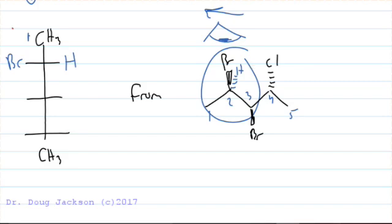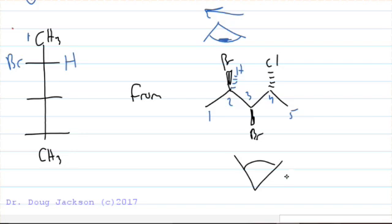The tricky part about this one is because we're drawn in a staggered configuration up, down, up, down, up, down, now we've got to look at carbon 3 with our eyeball below the structure that we have drawn here. Because now, the vertical bonds are away from us here and our horizontal bonds are at us here. So we have to change our perspective of how we're looking at this thing.